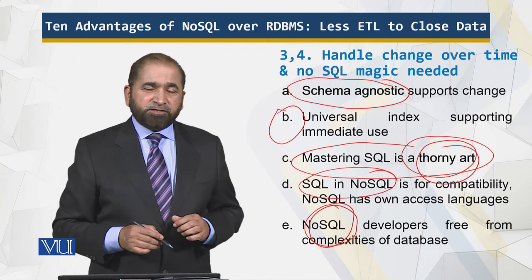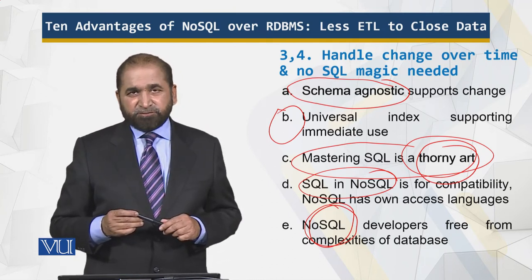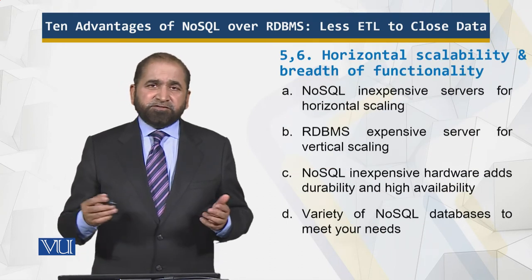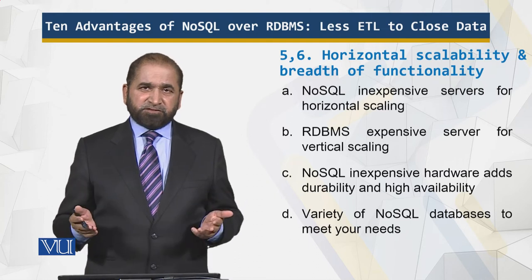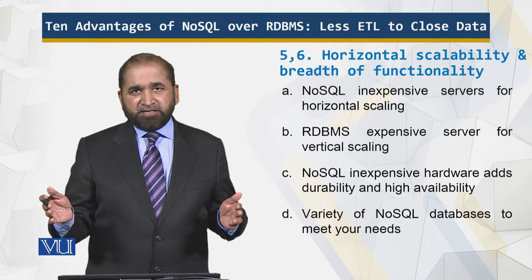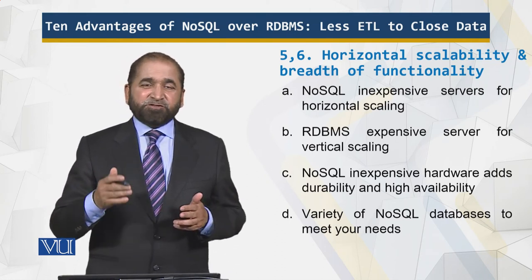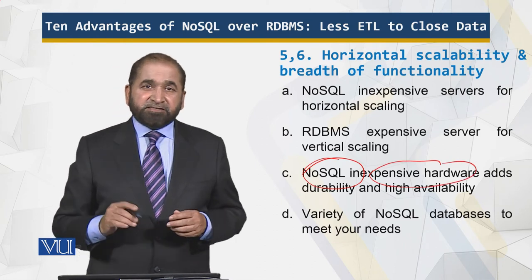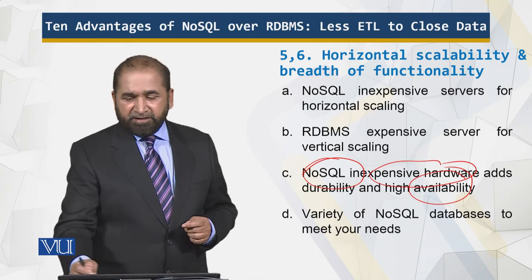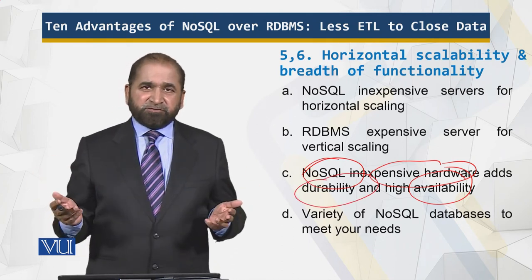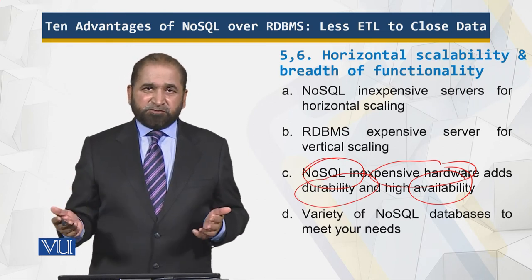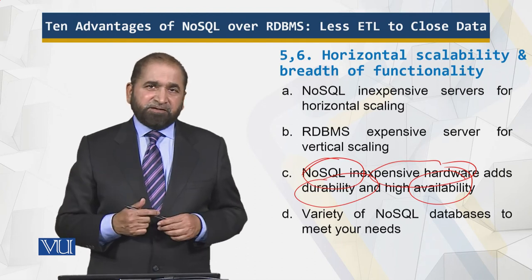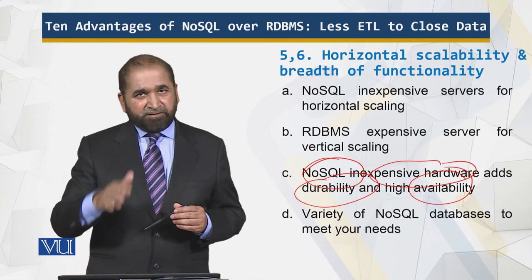NoSQL frees the developers from the complexities of the database, so they can spend more time being more productive. And of course there is the cost advantage — NoSQL runs on inexpensive servers, many inexpensive servers, which is horizontal scaling, versus buying a single expensive server, which is vertical scaling for the relational model. This inexpensive hardware increases availability and adds durability. When you have multiple servers, servers can crash — that is a fact of life — but with horizontal scaling it is very unlikely that all servers fail. Maybe one can fail, but in vertical scaling if that one server fails, everything stops.